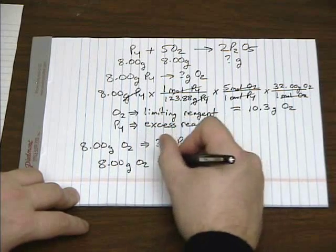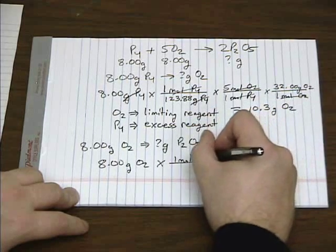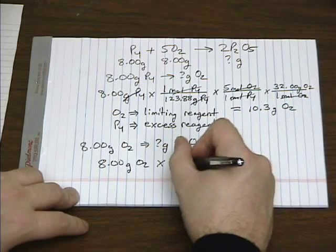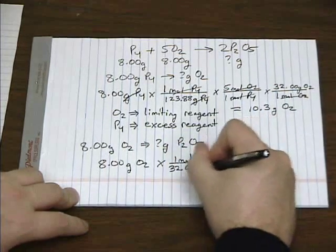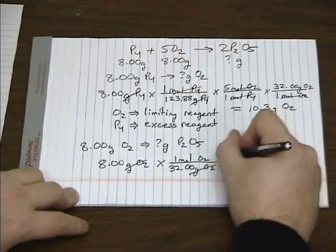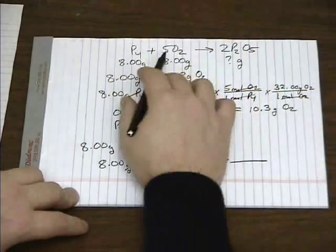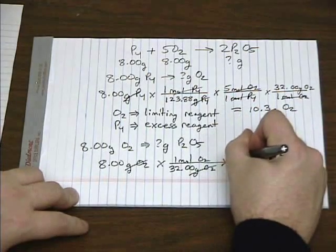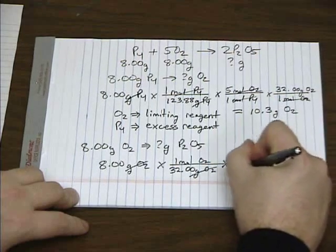So again, it's another stoichiometry calculation. And again, we're given a mass, so we've got to use molar mass to convert it to moles. And as we saw before, oxygen's 32 grams per mole. It's a 5 to 2 ratio or 2 moles of P2O5 for every 1 mole of O2.